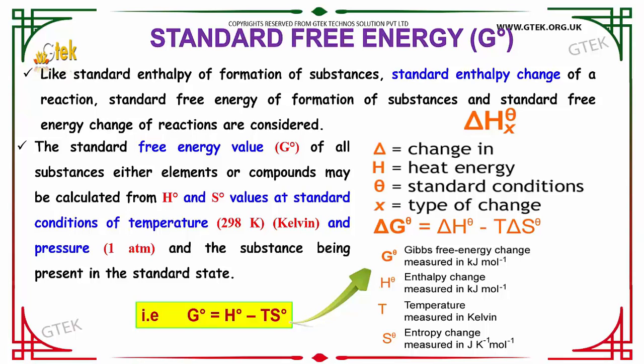G° values may be calculated from H° and S° values at constant conditions of temperature 298 Kelvin and pressure of one atmosphere, with the substance being present in the standard state. The formula is: G° = H° − T·S°.